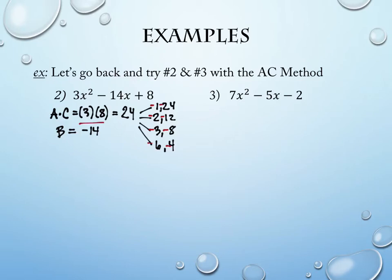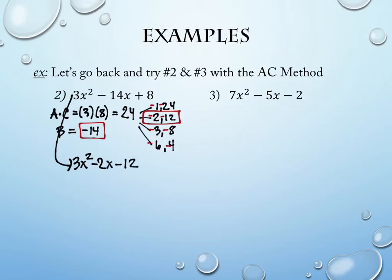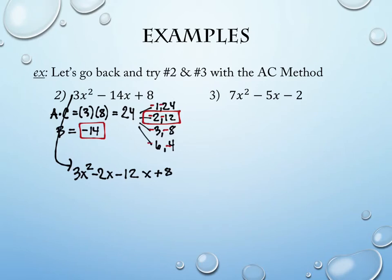Which two, when added together, will give me negative 14? Negative 2 and negative 12 — that's the winner. So what do we do? We take that middle term, negative 14x, and rewrite it as negative 2x and negative 12x in whichever order we like, plus 8 at the end. All we're doing is replacing the negative 14x with negative 2x and negative 12x — those are equal. Then we factor by grouping.